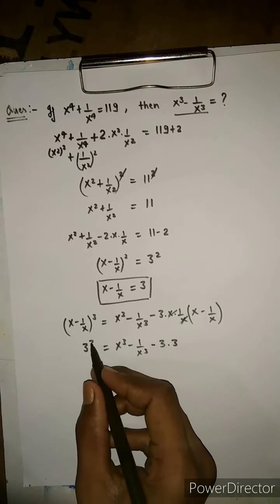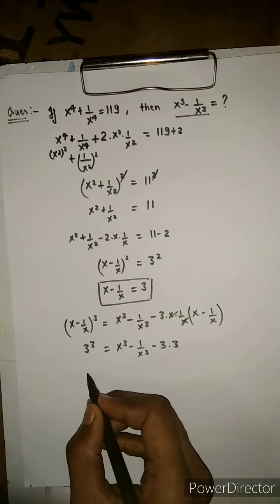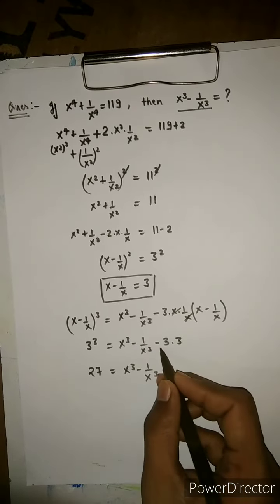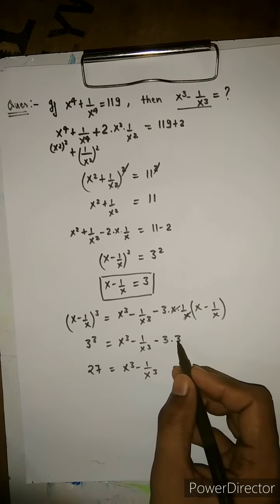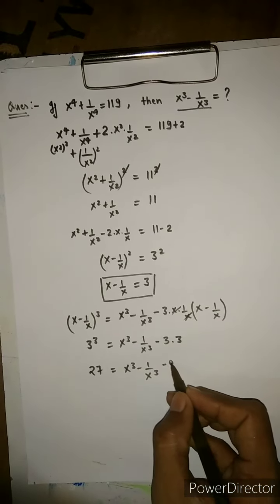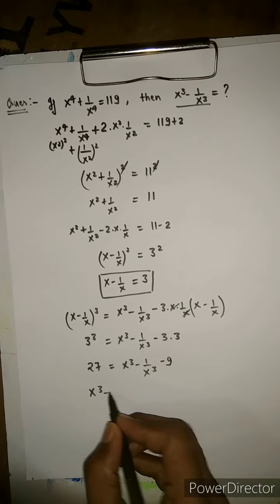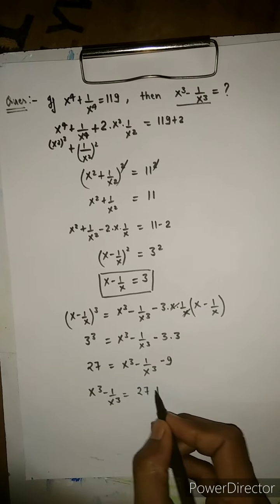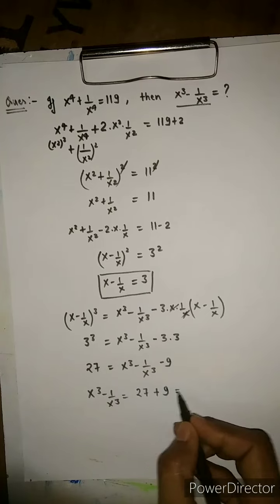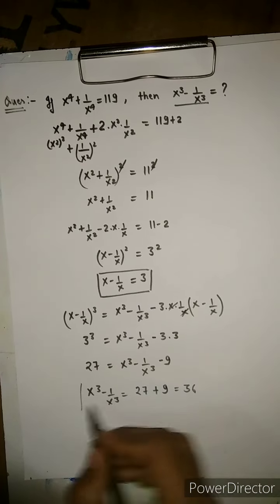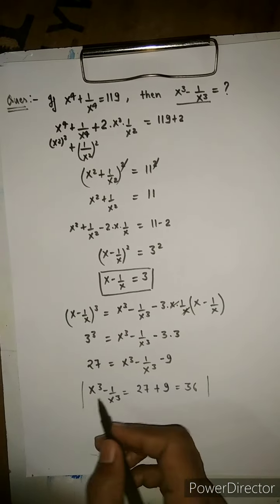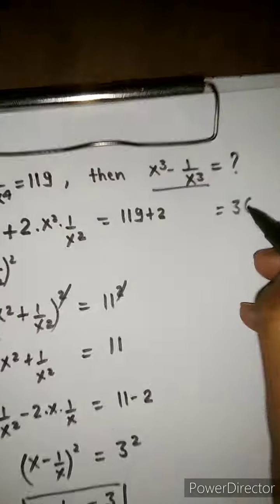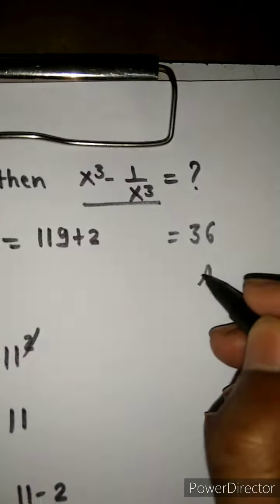3³ is 27, equal to x³ minus 1 over x³ minus 3 times 3, which is 9. So x³ minus 1 over x³ equals 27 plus 9, which equals 36. The value of x³ minus 1 over x³ is 36, and that is our answer.